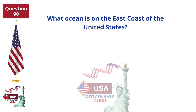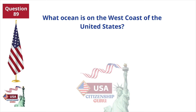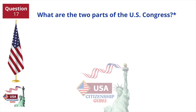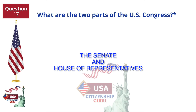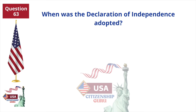What ocean is on the east coast of the United States? Atlantic Ocean. What ocean is on the west coast of the United States? Pacific Ocean. What are the two parts of the U.S. Congress? The Senate and House of Representatives. When was the Declaration of Independence adopted? July 4, 1776.